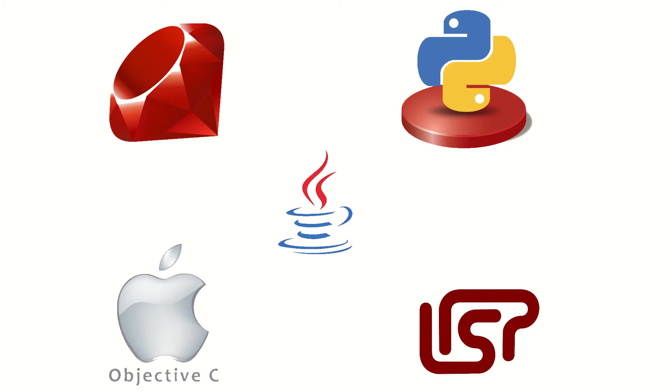Smalltalk was extremely influential in the design of other object-oriented languages, most notably Objective-C, Ruby, Python, and CLOS — the Common Lisp Object System.